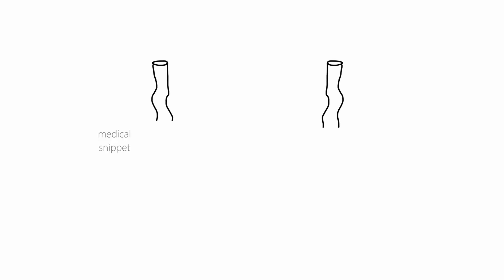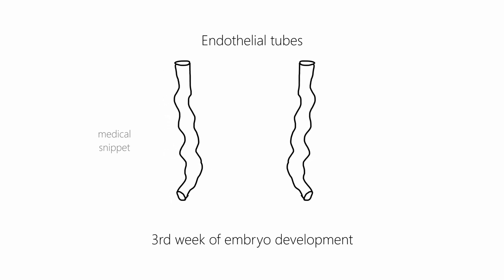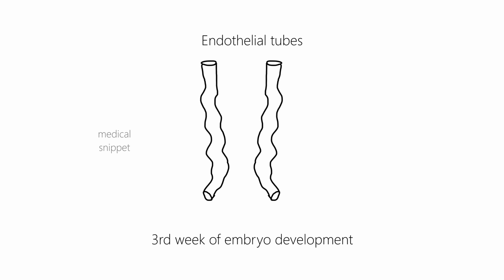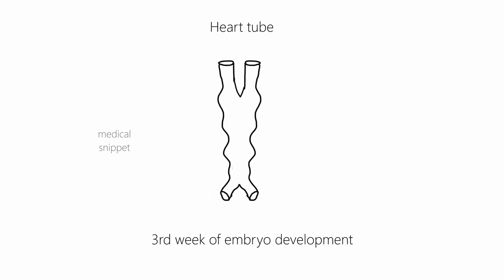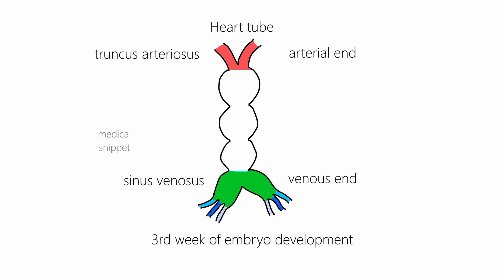Now we will discuss the development of these veins to understand in detail about the persistent left superior vena cava. By the third week of embryo development, the two endothelial tubes fuse to form the heart tube. It has an arterial end and a venous end. The arterial end is the truncus arteriosus and the venous end is the sinus venosus. Between them are the bulbus cordis, primitive ventricle, and the primitive atrium.